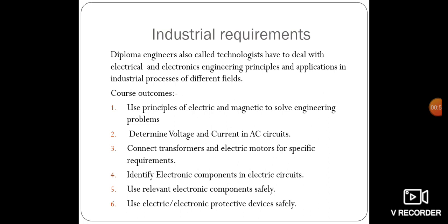Industrial requirements: diploma engineers, also called technologists, have to deal with electrical and electronics engineering principles and applications in industrial processes of different fields. So as we all know, diploma engineers are also called technologists, and everyone has to understand the basic principles involved in electrical and electronics engineering to solve real world problems.